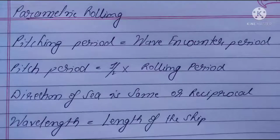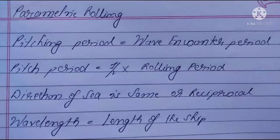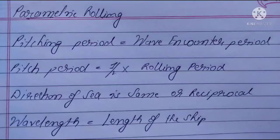The second condition is the pitch period is equal to half of the rolling period. The third condition is the direction of the sea is the same or reciprocal to that of the ship. The fourth condition is the wavelength of the wave is equal to, or approximately equal to, the length of the ship.